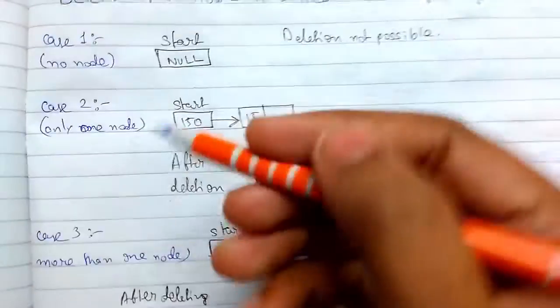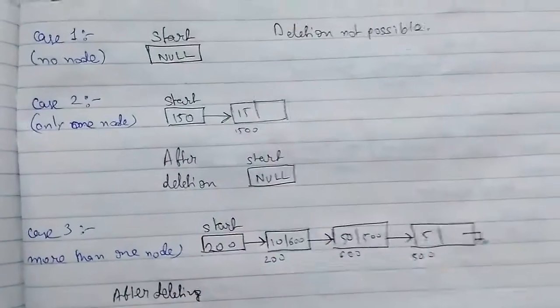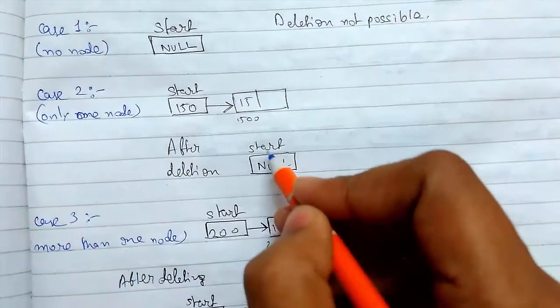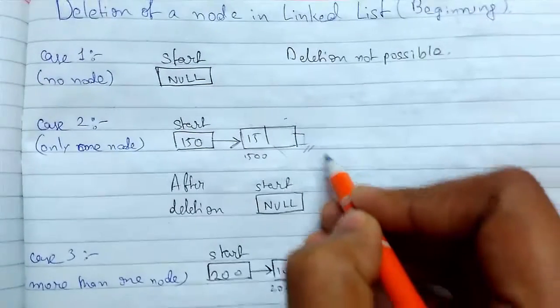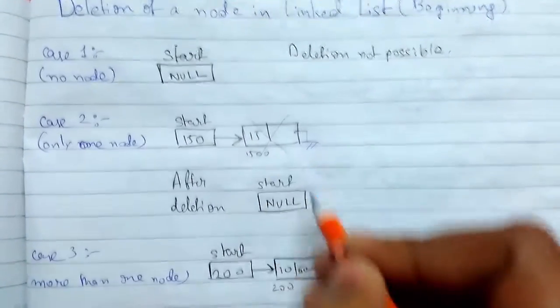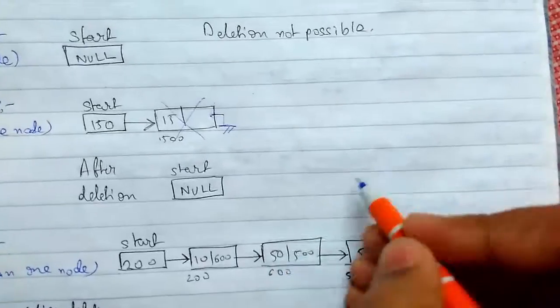And the other case, when there is only one element node present. So we need to remove this node. If we delete this node, this is what is getting left. So to do that, we must realize something that here the start has been set to null.